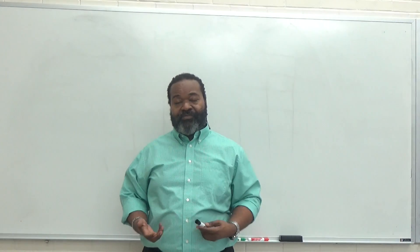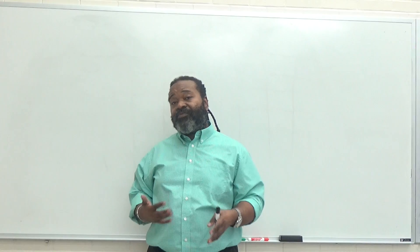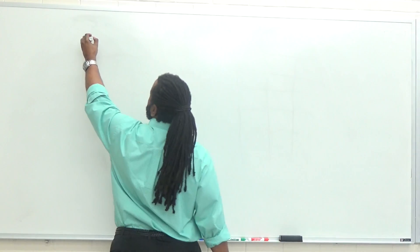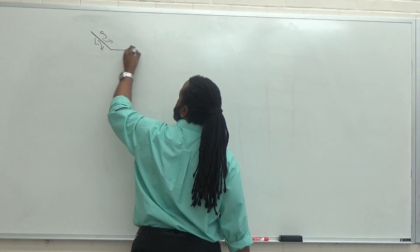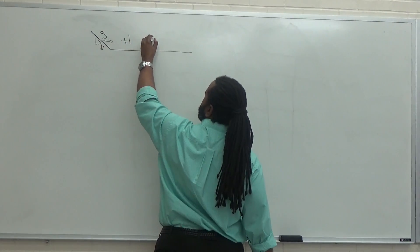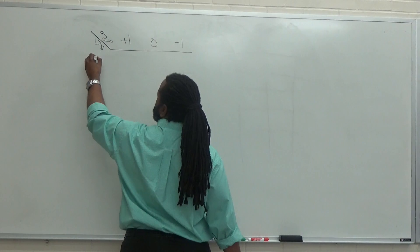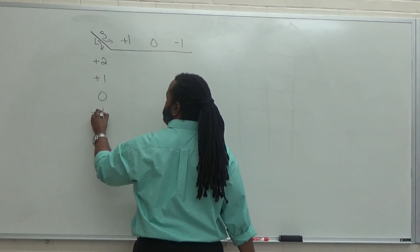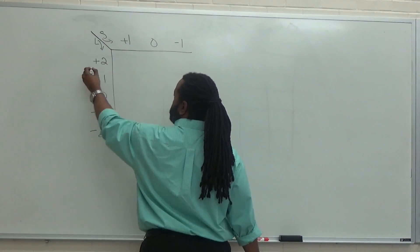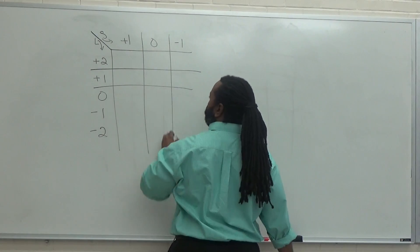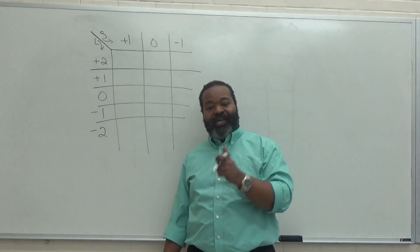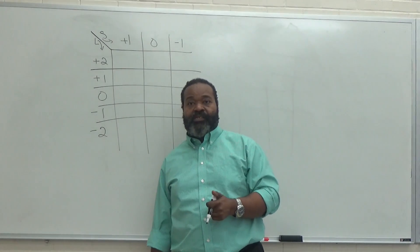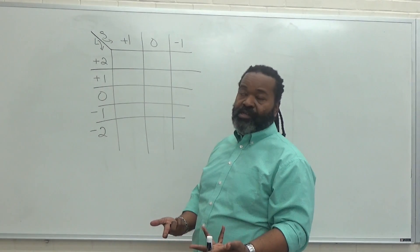Step four is to collect everything and make a single chart showing the number of different ways that you can get an L and S combination. So in this case, we want to have the range of L going this way and the range of S going this way. So S we can have a plus one, a zero, or a minus one. For the L's, it was plus two, plus one, zero, minus one, and minus two. And what we want to do now is write down every number of ways we could get each combination. And so for that, you would need to refer back to the charts in step three.